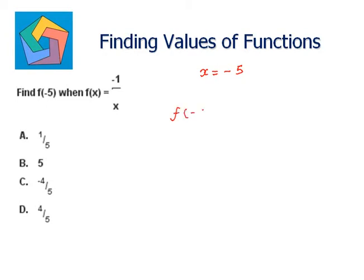We get f of negative 5 as negative 1 over negative 5. Negative times negative cancels out, this is equal to 1 over 5. So the value is 1 over 5, which is the answer in part A.